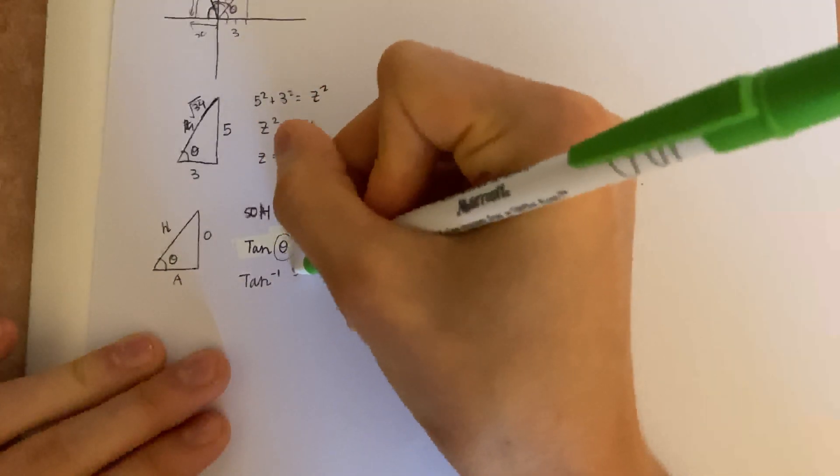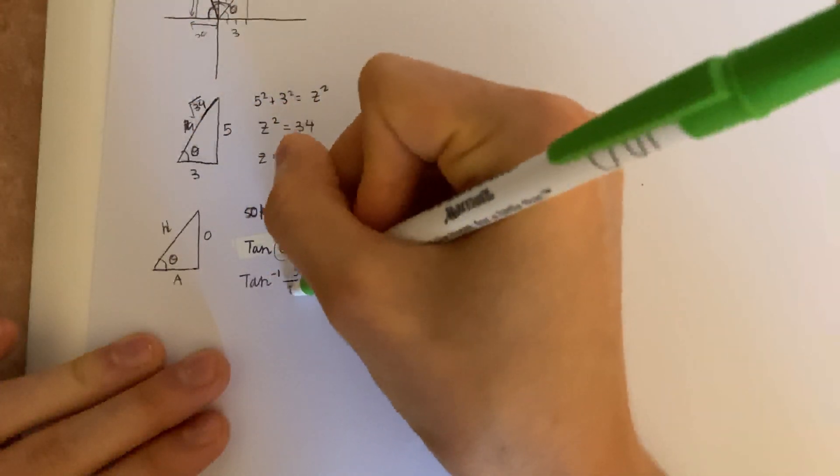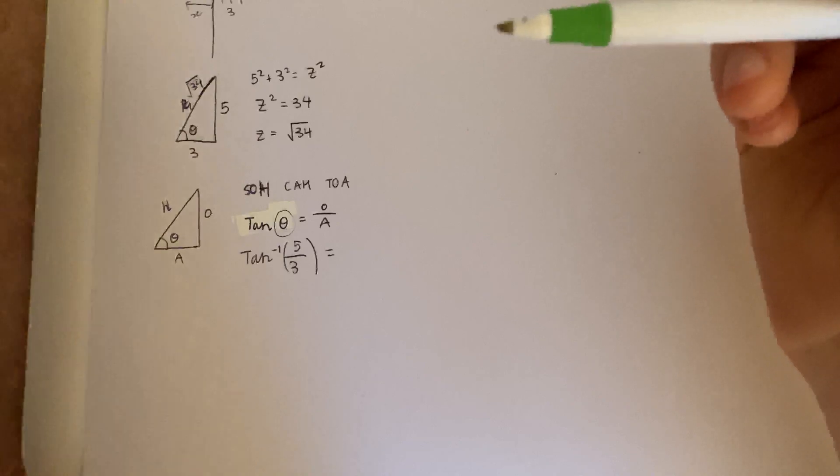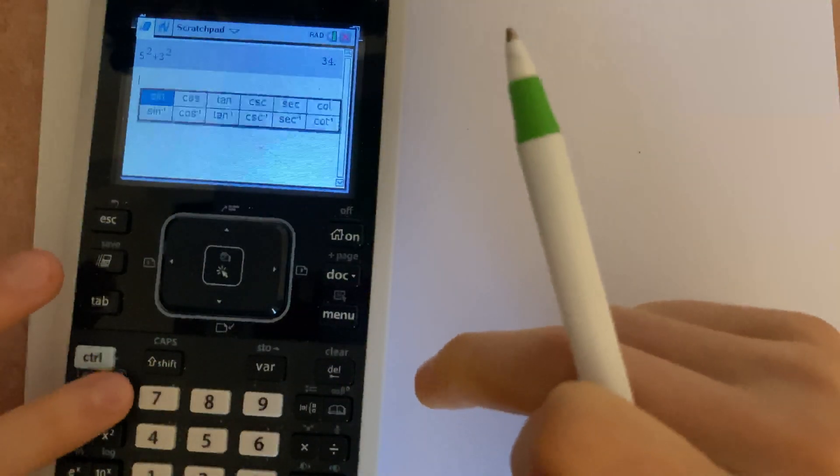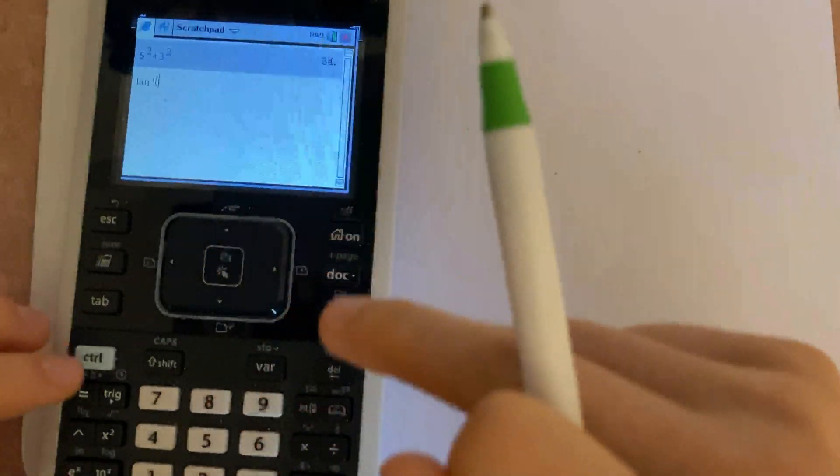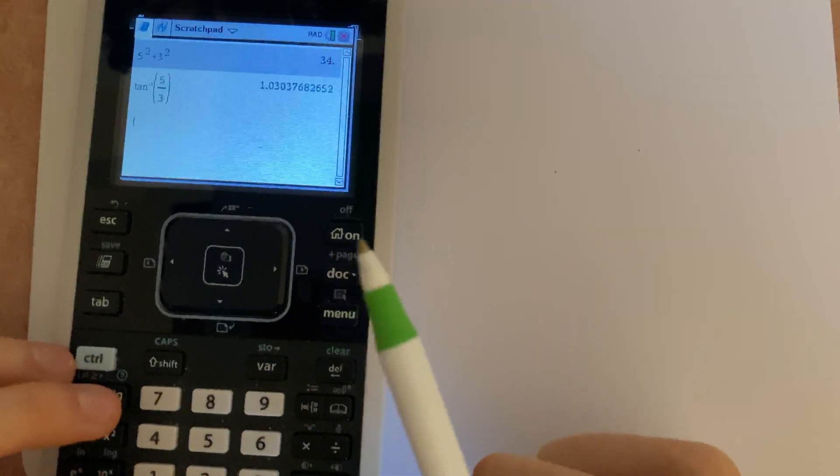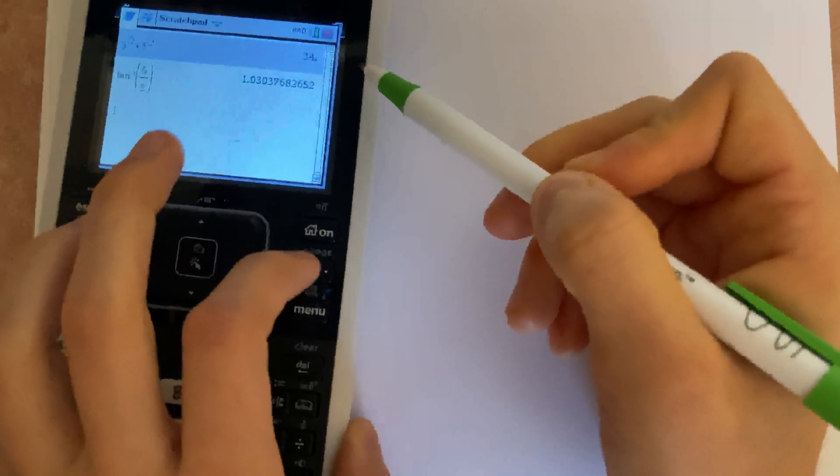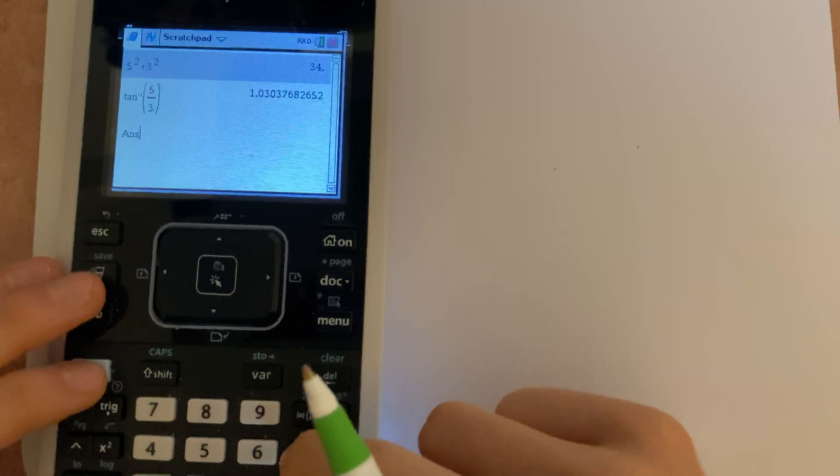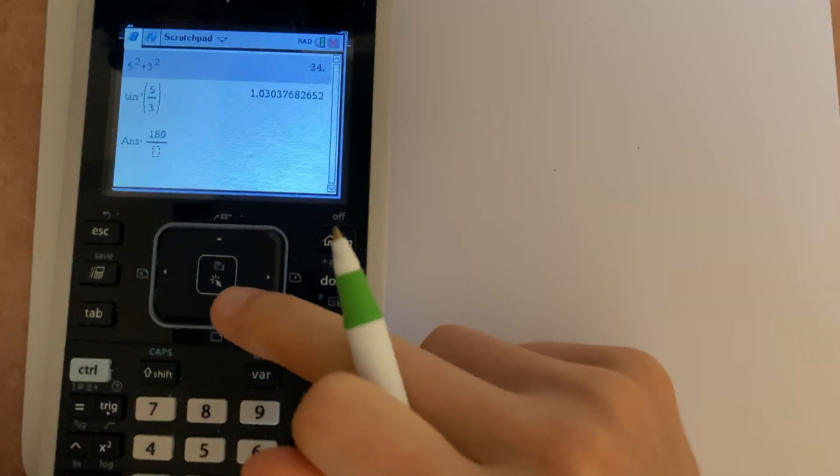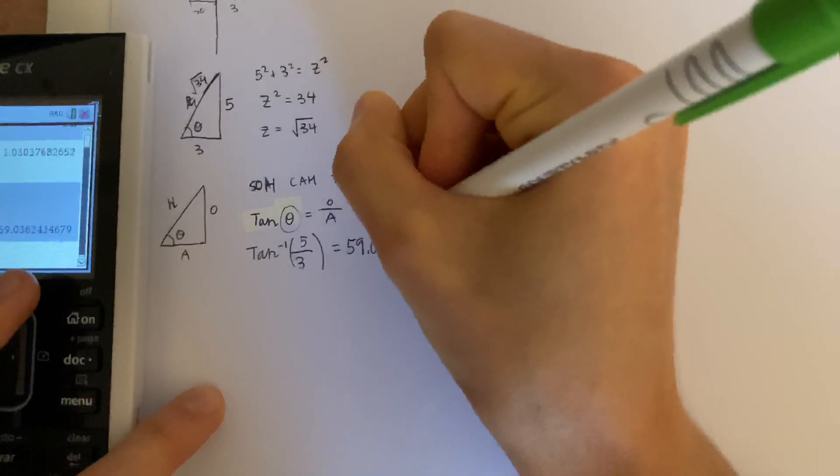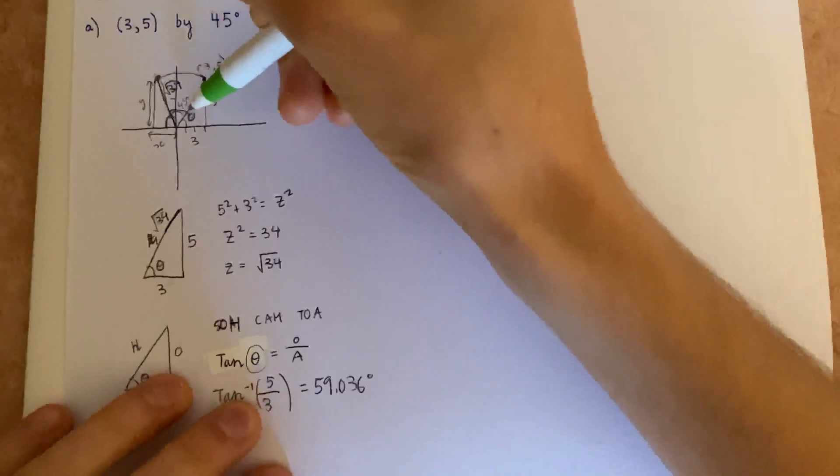So opposite is 5 and adjacent is 3. If we use our calculator to solve for that, that will give us the angle of theta. So let's see, trigonometry... here, that's what the arctan is. And it's 5 over 3. So that's in radians. Which, 1 radian equals 180 over pi degrees. So if we multiply this by 180 over pi, we'll get theta in degrees, which is approximately 59.036 degrees. That's this angle right here.